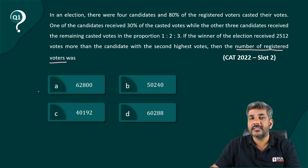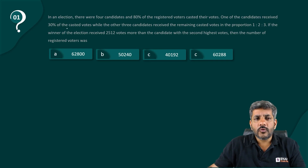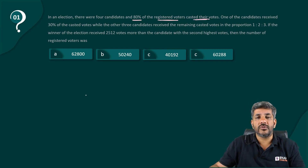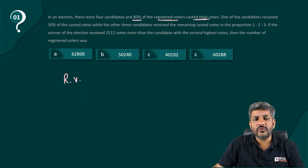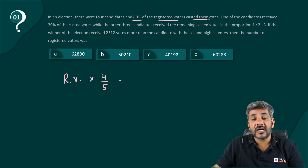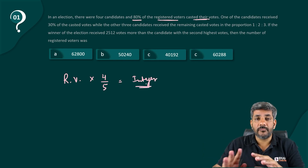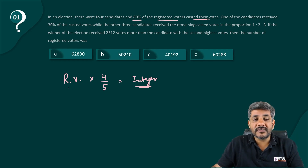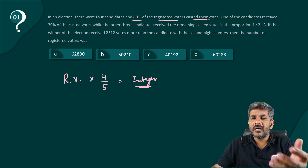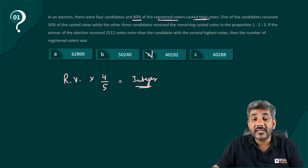Always pay attention to what the question asks — it makes things easier. 80% of registered voters cast their votes, meaning four-fifths of registered voters voted. Since the number of people who voted must be an integer, registered voters multiplied by 4/5 must be an integer. Therefore, the number of registered voters must be a multiple of 5.